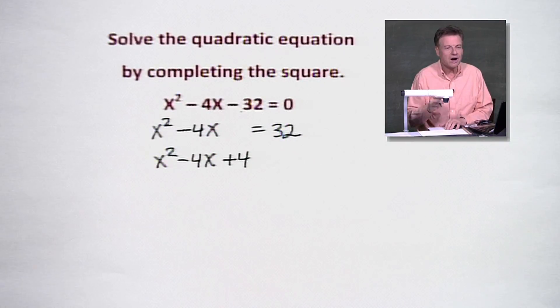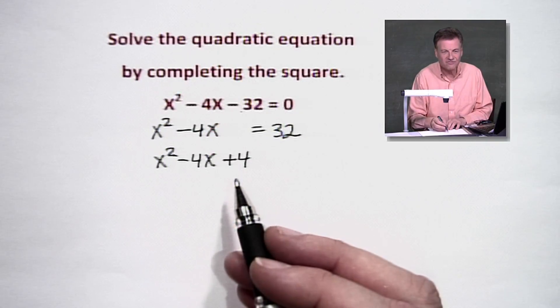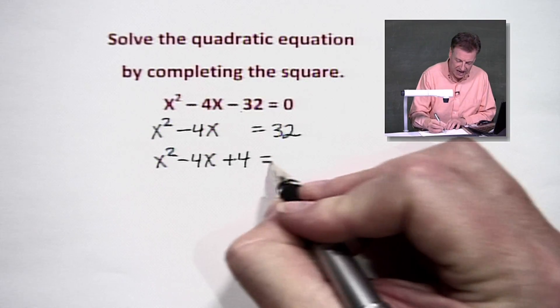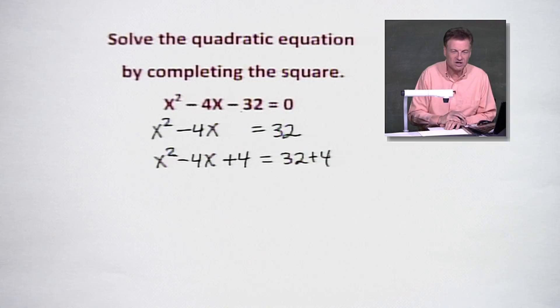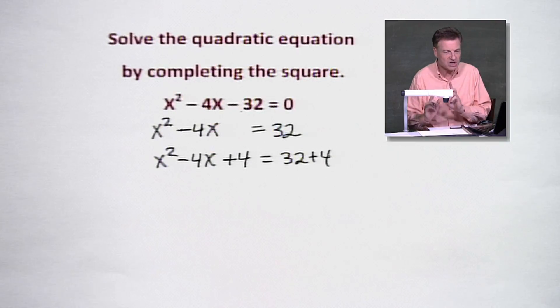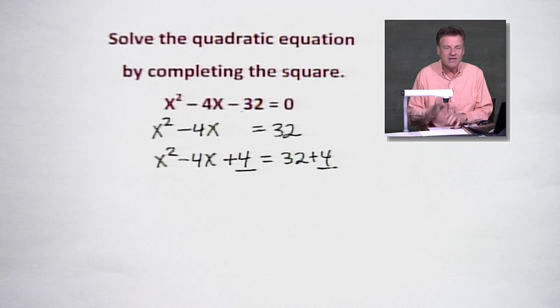Now, remember, if we add 4 on the left, we must add 4 also on the right. Good old addition property. The equality says you do it to the left, you've got to do it to the right. So there's the change we made. That's an important step right there because if you don't make that change, you're not going to get the right answer.